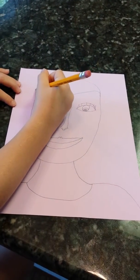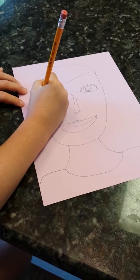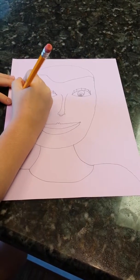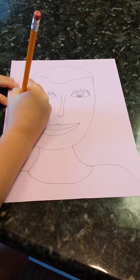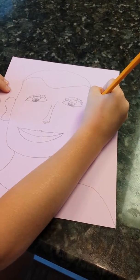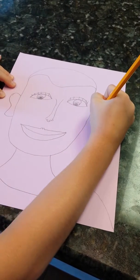And then the hair—actually, the ears. So draw like a loop, and then go in and back out again. Loops. And then back out again.